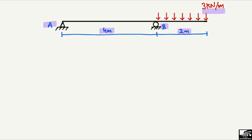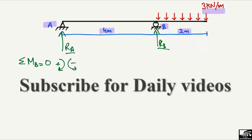We assume both support reactions RA and RB are acting in the upward direction. To find the support reactions, we use the equilibrium equation: summation of moments at point B equals zero. We assume clockwise moments are positive and anti-clockwise moments are negative.